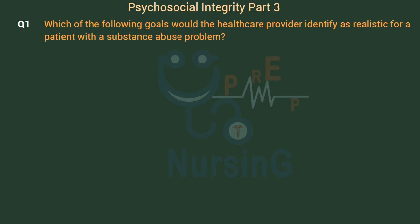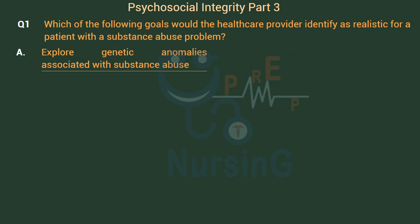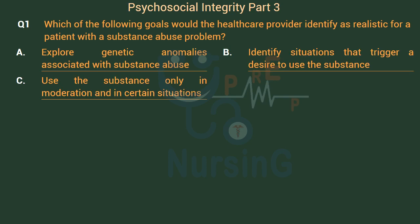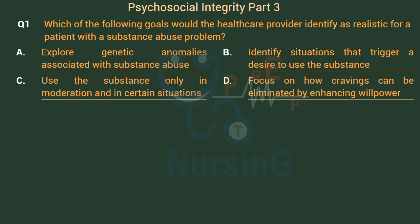Which of the following goals would the healthcare provider identify as realistic for a patient with a substance abuse problem? Option A: Explore genetic anomalies associated with substance abuse. Option B: Identify situations that trigger a desire to use the substance. Option C: Use the substance only in moderation and in certain situations. Option D: Focus on how cravings can be eliminated by enhancing willpower.